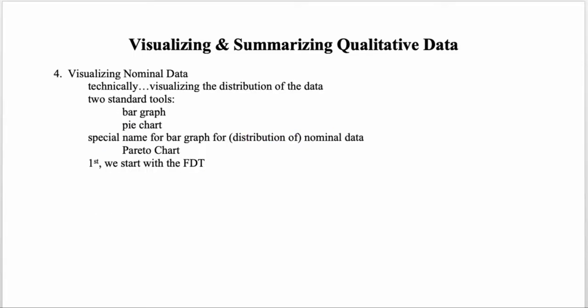The FDT allows us to summarize nominal data. If we next want to visualize nominal data, we have a couple of standard tools — technically, we're visualizing the distribution of the nominal data. The two tools often used are the bar graph and the pie chart, and there's a special name for a bar graph used with nominal data: the Pareto chart.